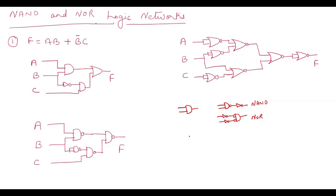Similarly, if we have a two-input OR gate and want to express it in NOR logic, we put a bubble at the output of the OR gate — making it a NOR gate — and then to neutralize this bubble we place an inverter at the output. That gives us the NOR structure for replacing an OR gate.